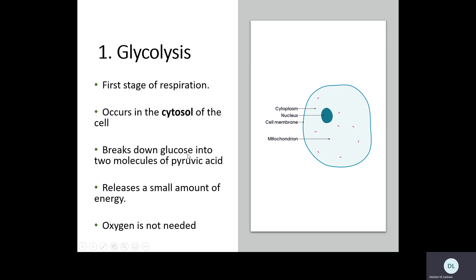In glycolysis, glucose is broken down into two molecules of pyruvic acid. It's not fully broken down yet — it's an intermediate step, partially broken down in this first stage. This first stage only releases a small amount of energy. Oxygen isn't actually needed for this first stage — the reason oxygen appears in the overall equation is that it's needed to complete the breakdown of pyruvic acid in the second stage.